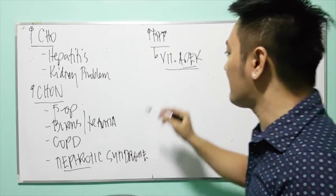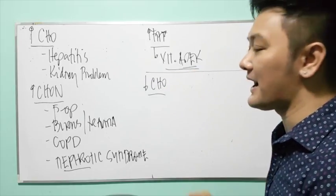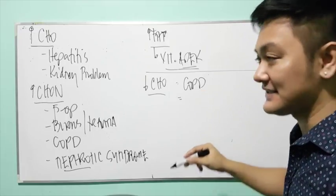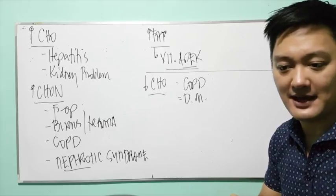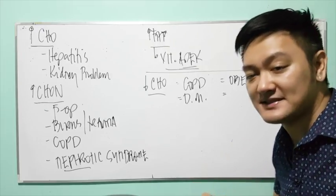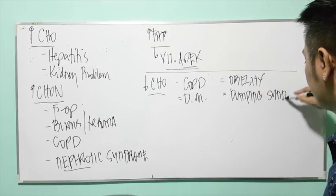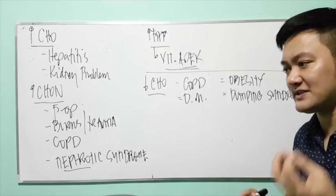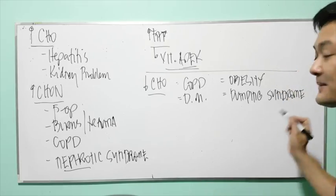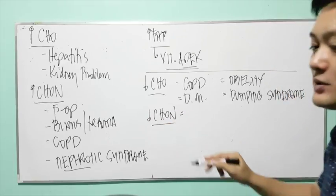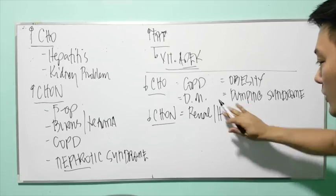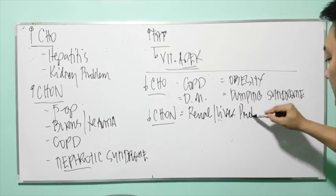Low-carb diet is indicated for patients with COPD, diabetes mellitus, those who are obese, and patients with dumping syndrome — a complication of gastric surgery where food rapidly passes into the jejunum without proper digestion. Low-protein is indicated for patients with renal problems or liver (hepatic) problems.